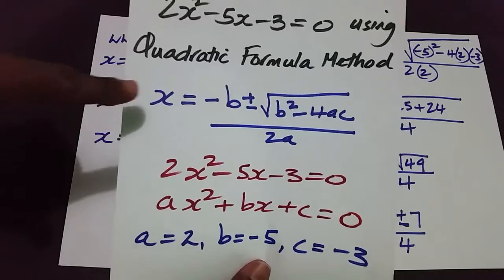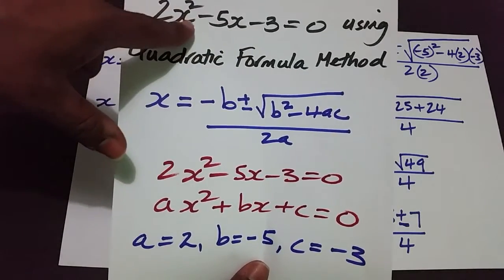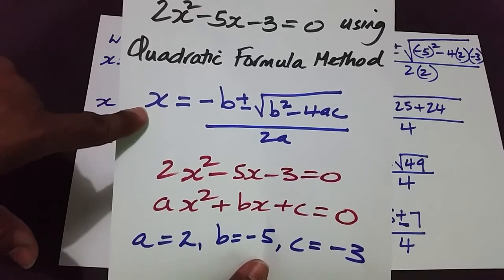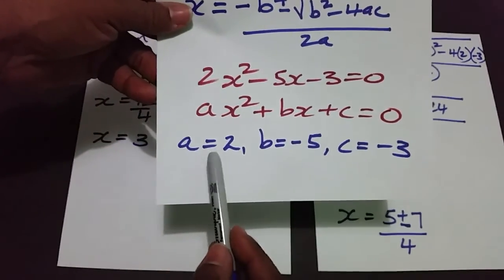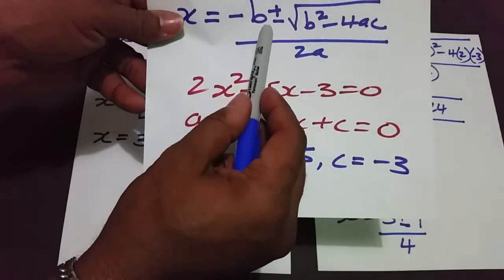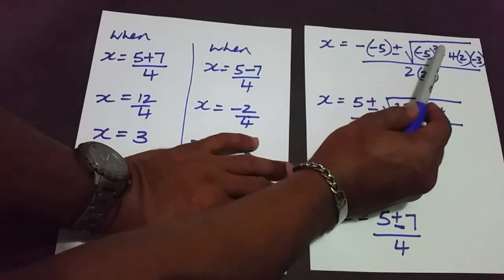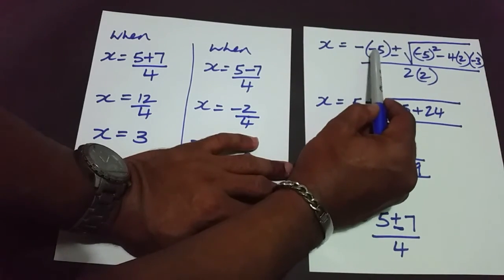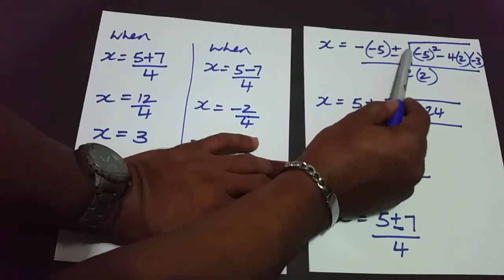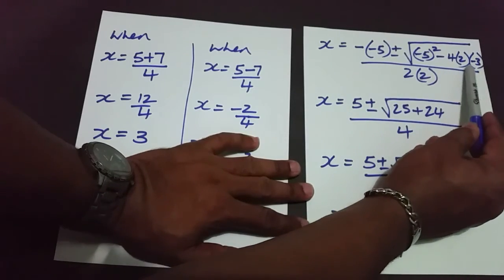Once you get decimal points under the square root, you know you couldn't have used factorization. We use x here because x is the variable in the quadratic equation — if it were a different letter, that would go here instead. The key is to correctly identify the values of a, b, and c before you plug them in. The substitution must be in brackets, and this original negative belongs to the formula — in this case b was negative 5, so be careful of that.